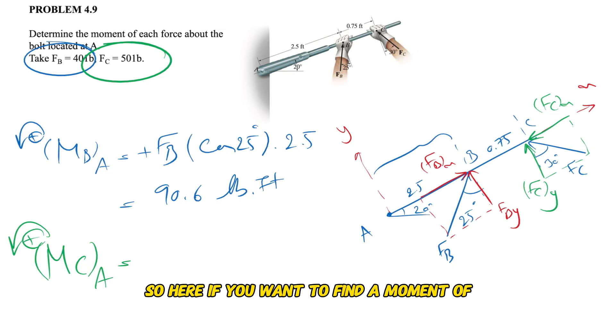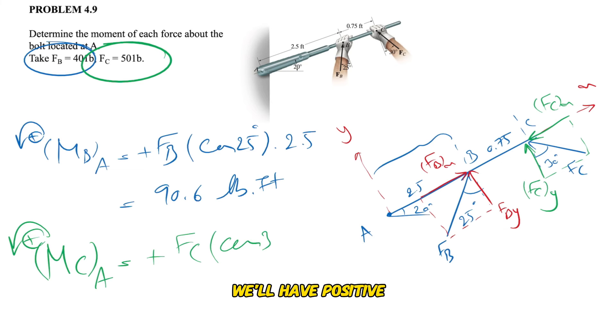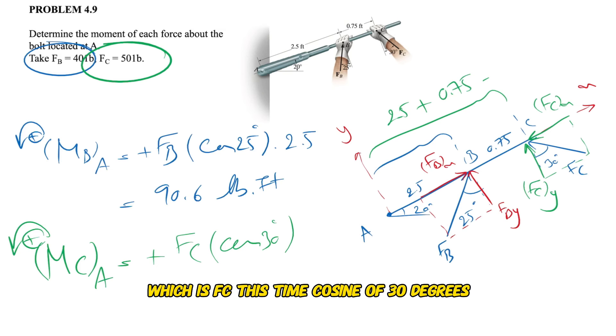So here if we want to find the moment of Fc about point A, again counterclockwise is positive. Fcx won't make any moment and we'll have the moment of Fcy which will be counterclockwise, which is positive. So we'll have positive and it will be Fcy which is Fc times cosine of 30 degrees.